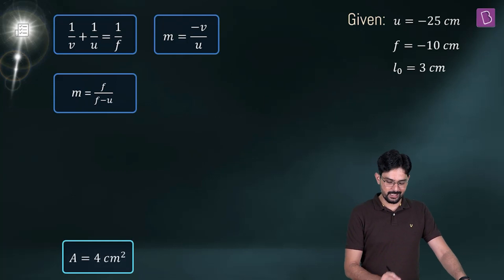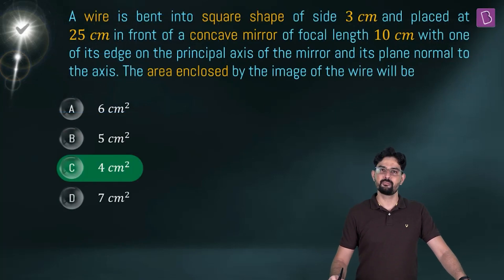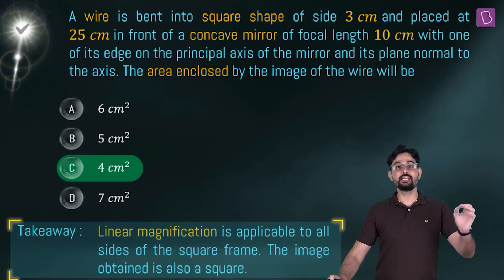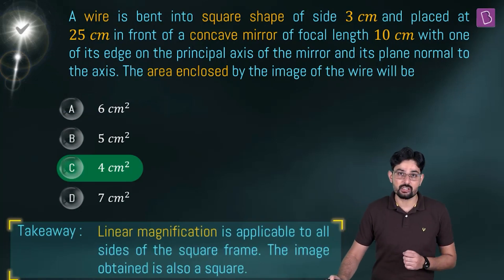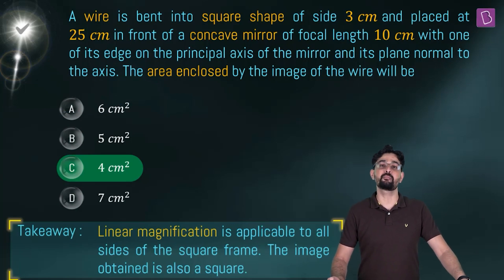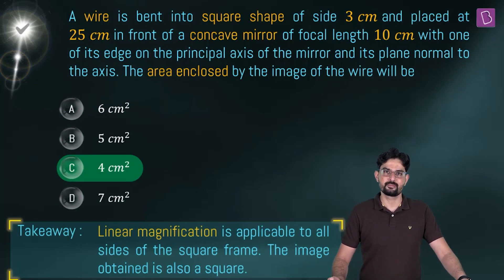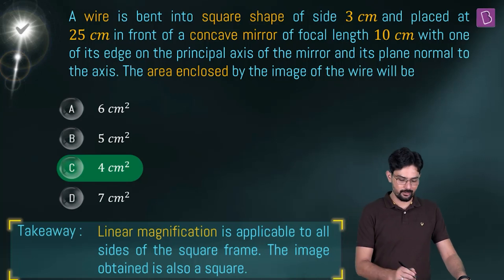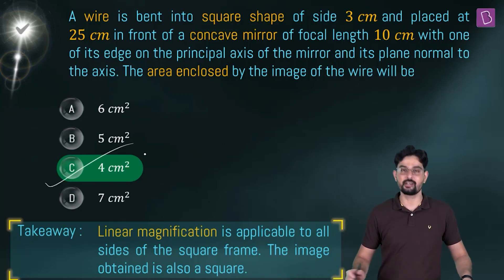The takeaway for this problem is that the linear magnification is applicable to all sides of the square frame because the square frame is perpendicular to the principal axis. So the image obtained is also a square and the area is 4 cm².